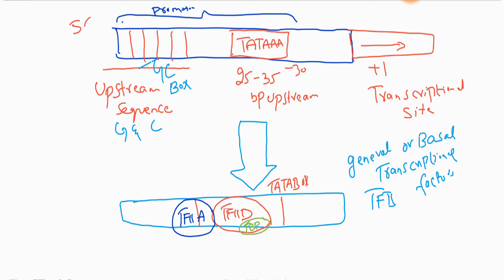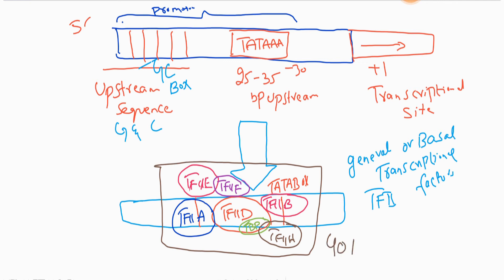After TF2A, the next protein complex TF2B binds to the TF2D–TATA box complex and also binds to RNA polymerase 2, acting as a bridge. This is followed by the binding of TF2F, TF2E, and TF2H. All these protein complexes together with RNA polymerase form what is called the transcriptional initiation complex.